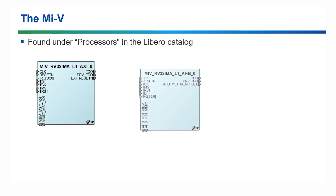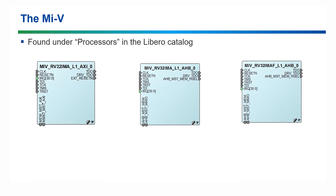Now let's have a look at the Mi5 itself. There are three variants of the Mi5 core, and they can all be found under processors in the Libero catalogue. They all look relatively similar but they're very different — the difference is in the name. The first core is the MiV RV32-I-MA-L1-AXI, the second is the MiV RV32-IMA-L1-AHB, and the third is the MiV RV32-IMAF-L1-AHB. We've got two that are IMA and one that's IMAF, and then two that are AHB and one that's AXI.